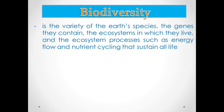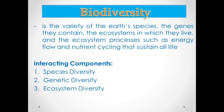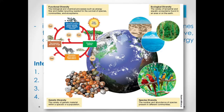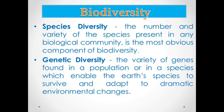There are four interacting components of biodiversity: species diversity, genetic diversity, ecosystem diversity, and functional diversity. Species diversity refers to the number and variety of species present in a biological community, and it is the most obvious component of biodiversity. Scientists think that ecosystems with high levels of species diversity tend to be more stable.